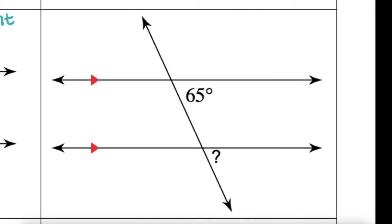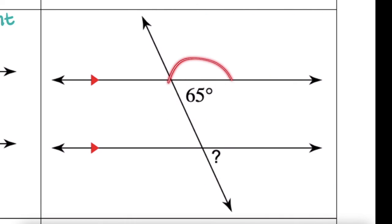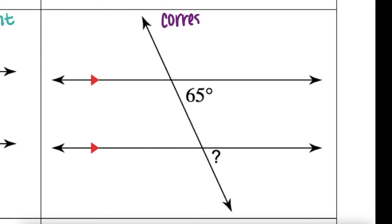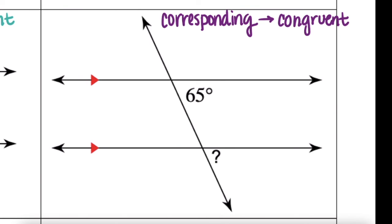How about these? One angle is inside the parallel lines and one is outside, but they're on the same side of the transversal and in the same location — these are corresponding angles. As we saw in our exploration, corresponding angles are always congruent when lines are parallel. So if this angle measures 65 degrees, the missing angle is also 65 degrees.